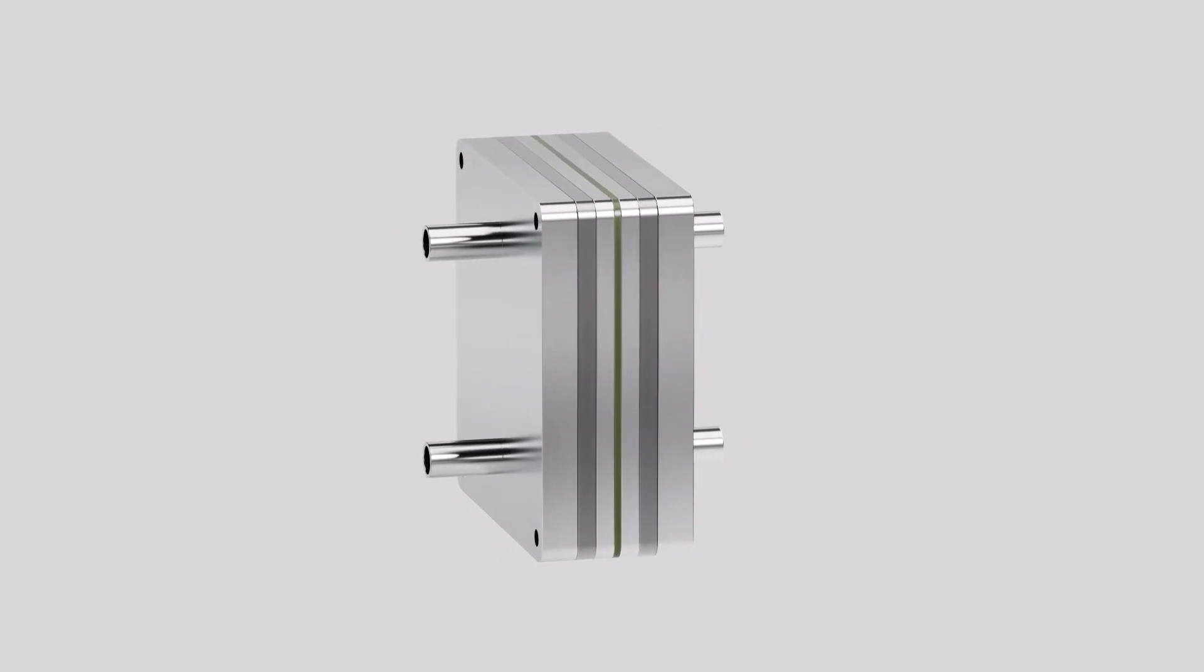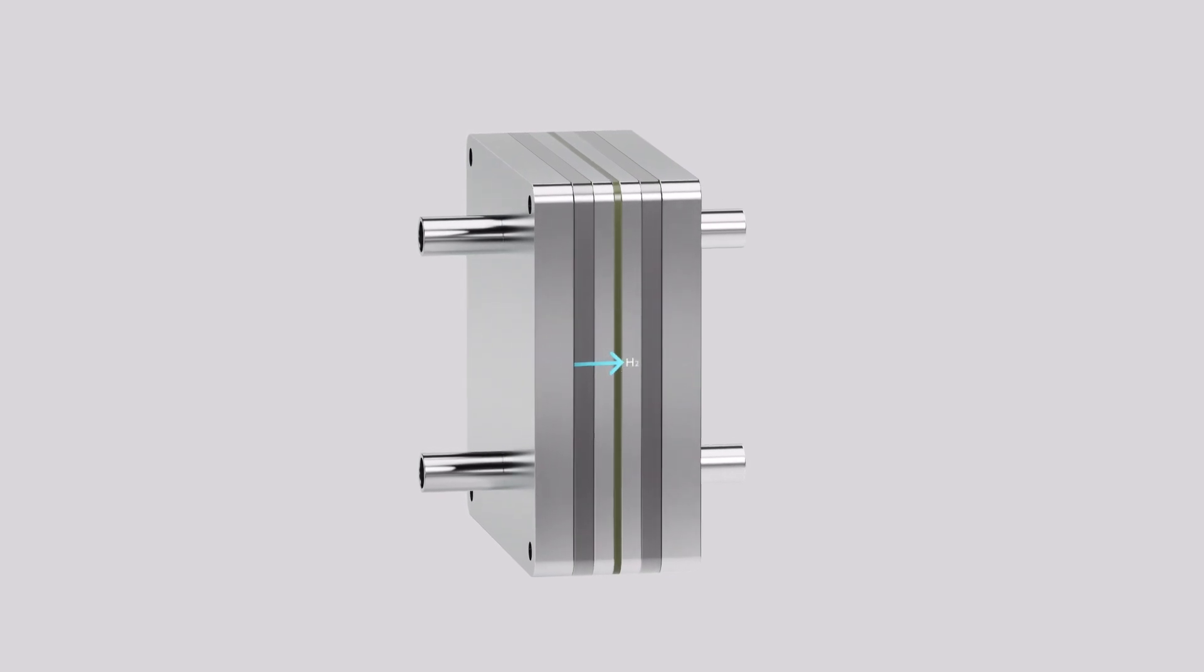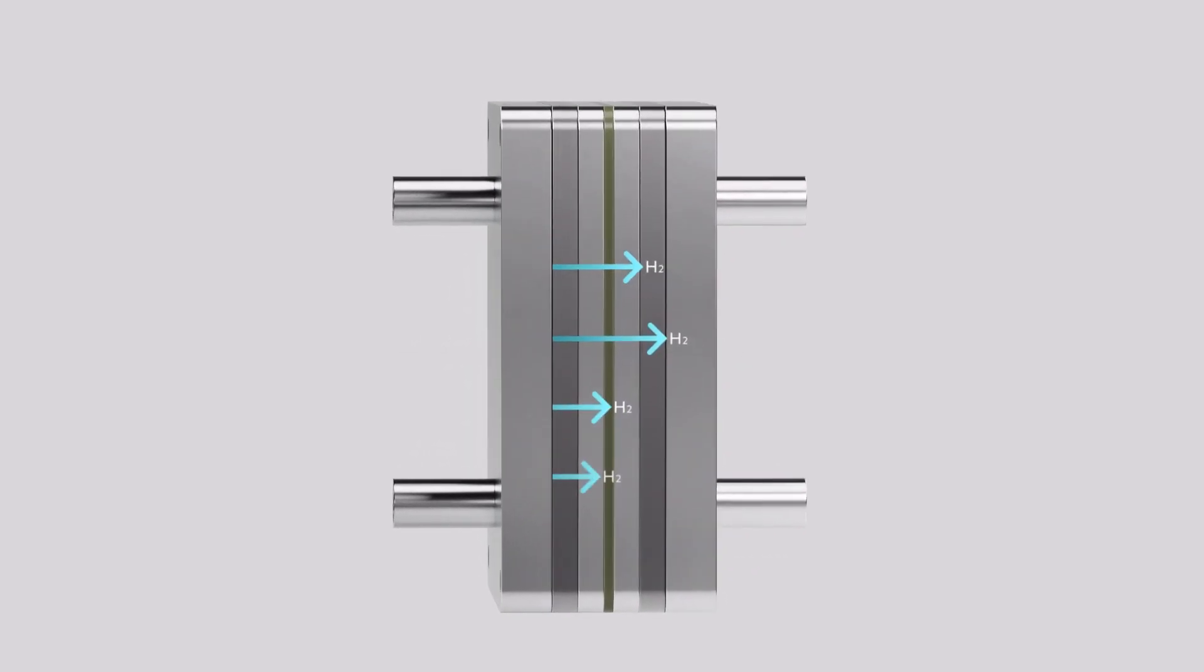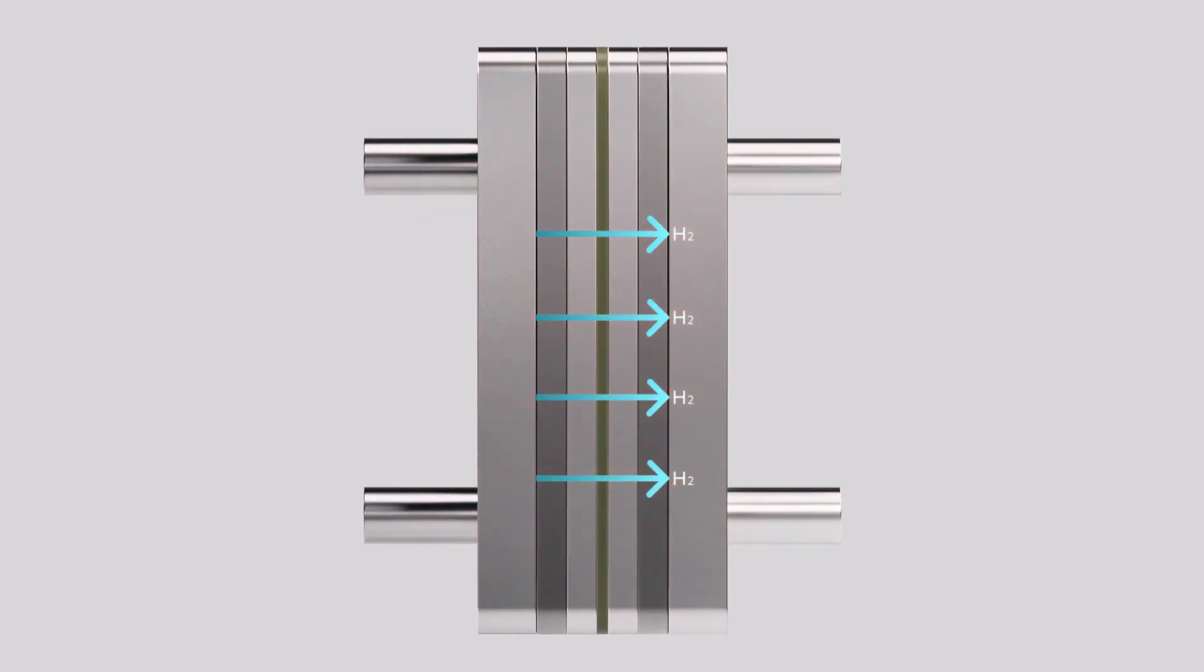However, the challenge with thin membranes is hydrogen crossover from the cathode to the anode. Too much hydrogen crossing to the oxygen side creates an explosive gas mixture.